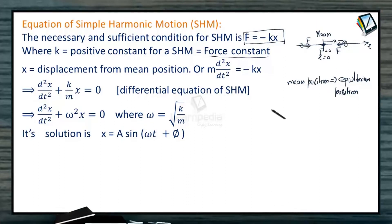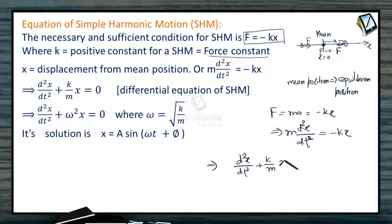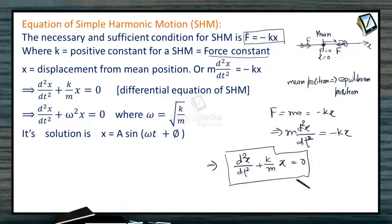So force F equals mass times acceleration equals minus kx. Acceleration can be written as the second derivative of displacement, something we are very much aware of. So this gives the equation: d²x/dt² + (k/m)·x = 0. This is the equation which the particle must follow in case it is performing simple harmonic motion — the displacement x must satisfy this differential equation.